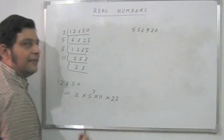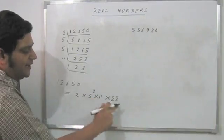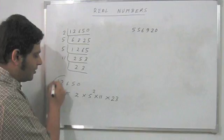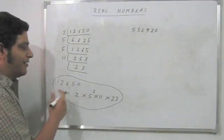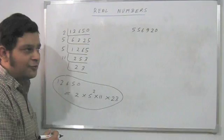But the point to note is that 2 occurs once, 5 occurs twice, so 5 squared, 11 and 23 occur only once. So this is the prime factorization of 12650.